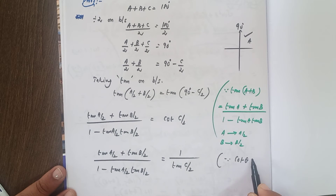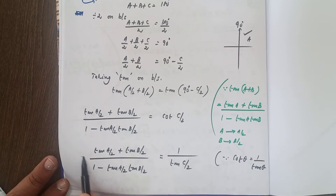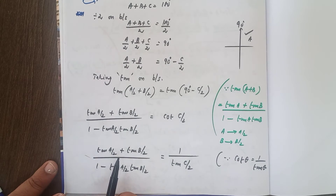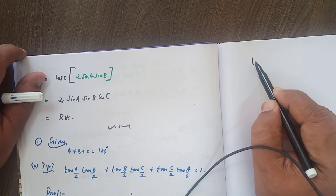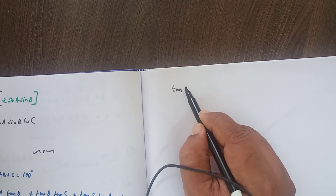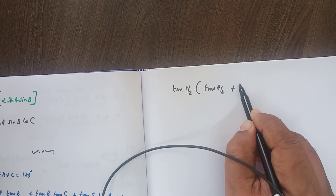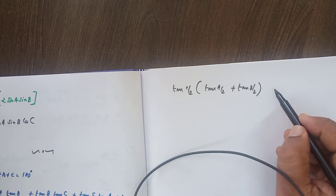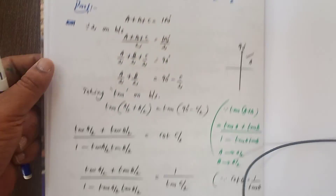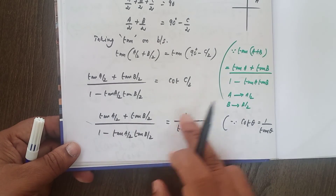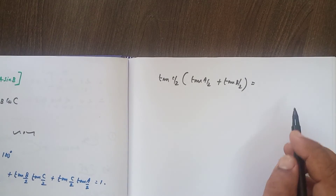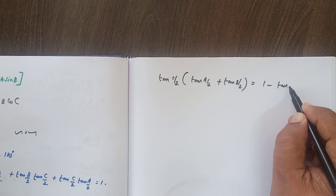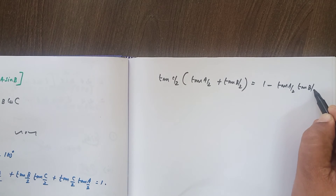Since cot θ = 1/tan θ, we now cross multiply. Cross multiplying gives tan(C/2) into (tan(A/2) + tan(B/2)) equals 1 minus tan(A/2)·tan(B/2).